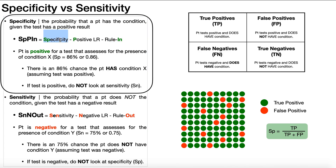The specificity value is used whenever you have a positive result. If the test result is negative, you don't use specificity — that's when you use sensitivity. If you have a positive result, you look at the specificity, and the higher that specificity value is, the more likely you can rule in a condition — in other words, the higher the probability that the patient actually has that condition.